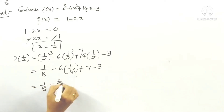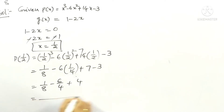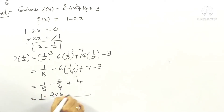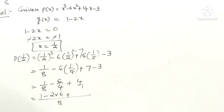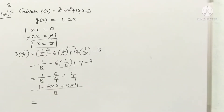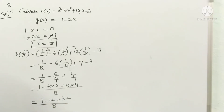So it is 1 by 8 minus 6 by 4 plus 4. The LCM is 8. 4 divides 8 two times, giving 8 into 4 equals 32. So the addition is 32 plus 1 = 33, minus 12, giving 33 minus 12 by 8. Subtracting gives 21 by 8. Therefore the remainder is 21 by 8.